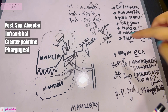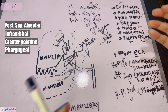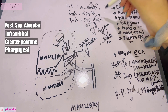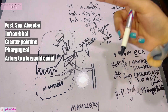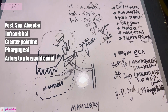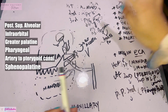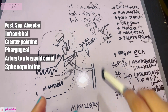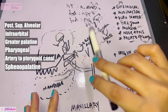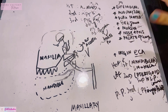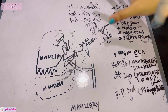A is for the artery to the pterygoid canal, which runs through the pterygoid canal and supplies the auditory tube, part of the middle ear, and the pharynx. S is for the sphenopalatine artery, also known as the artery of epistaxis — when there is a nosebleed, the sphenopalatine artery is usually involved. It runs through the sphenopalatine foramen within the palatine bone and supplies most of the nasal structures.